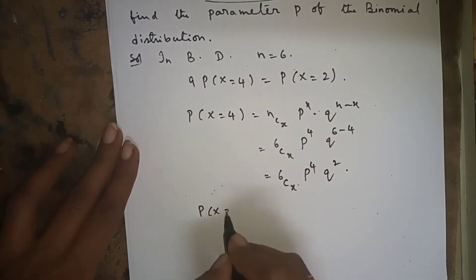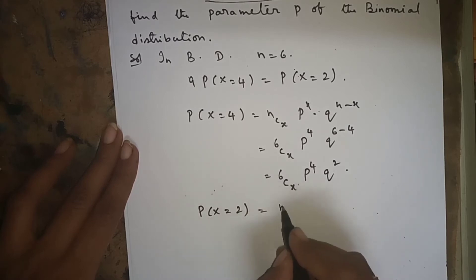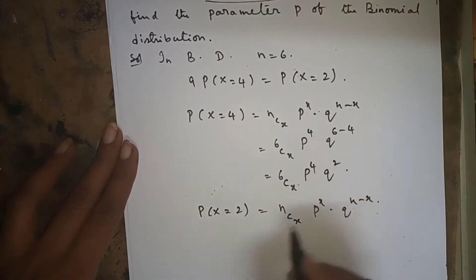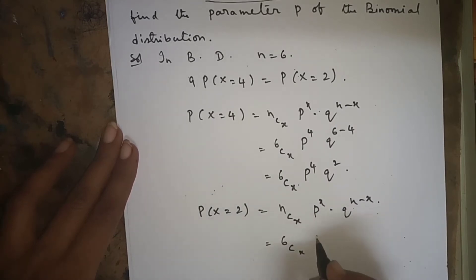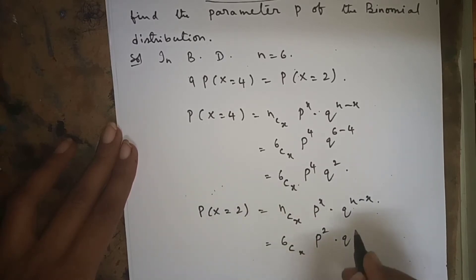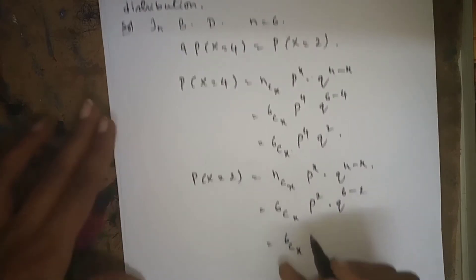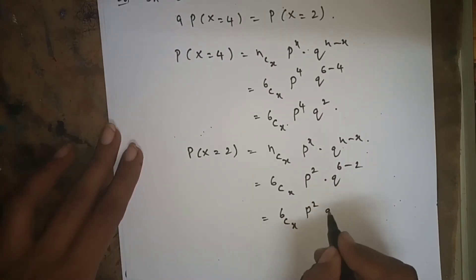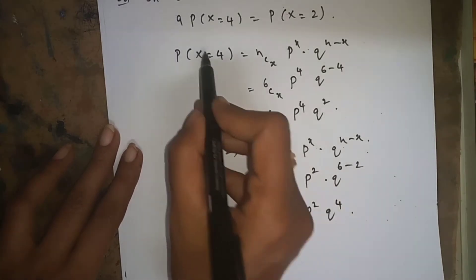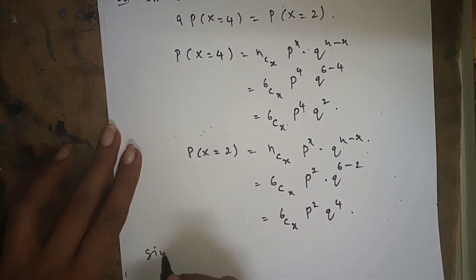In the same way, P(x=2) using the same formula nCx * p^x * q^(n-x), with n=6 and x=2, gives us 6C2 * p^2 * q^(6-2) = 6C2 * p^2 * q^4. So P(x=2) = 6C2 * p^2 * q^4.